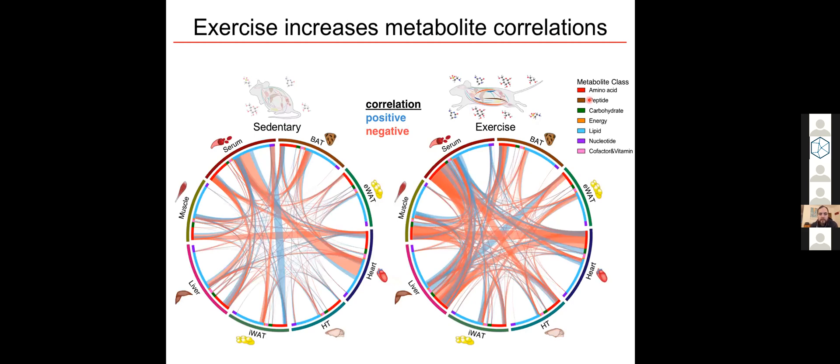When we compare metabolites among tissues, we can get an idea of how individual metabolites, groups of metabolites, and even metabolic processes are coordinated between tissues. Here we just looked at pairwise associations across different tissues, independent of time of day, so just the effect of exercise per se.